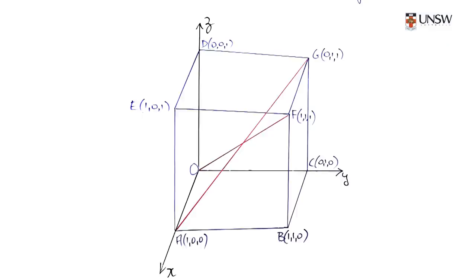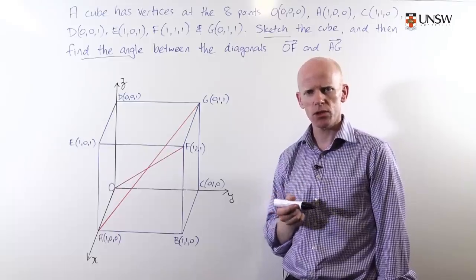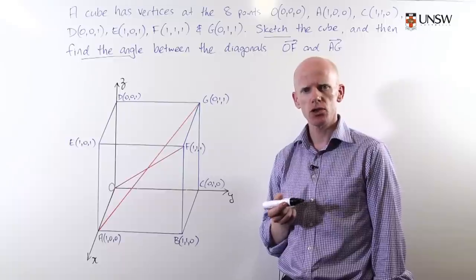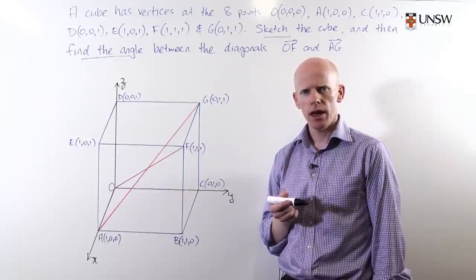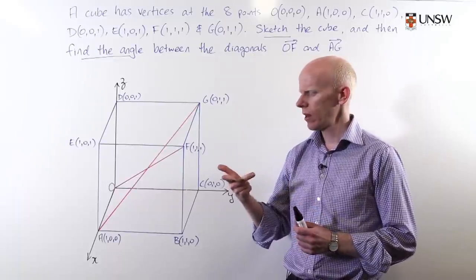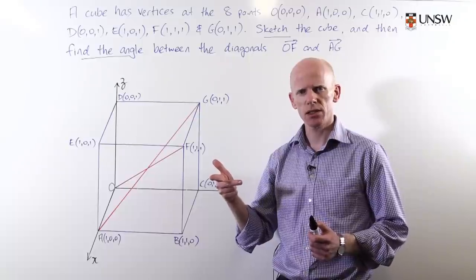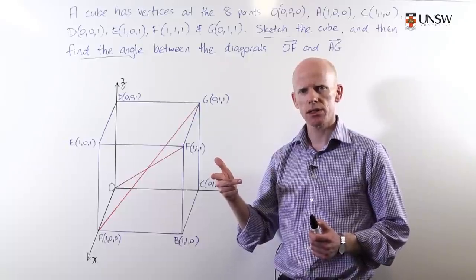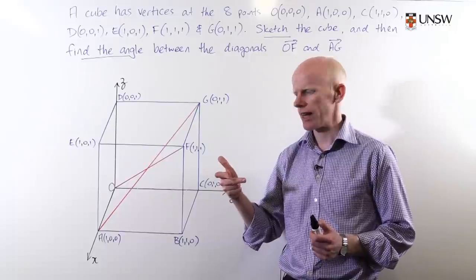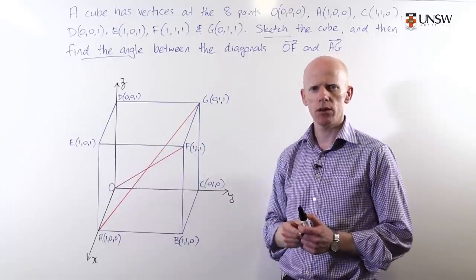The first part of this question — sketching the cube — is very, very important. The first thing you'll want to do before you sketch your cube is choose your axes. Using the right-hand rule, where my index finger represents the x-axis, my middle finger represents the y-axis, and my thumb represents the z-axis, I've come up with this particular configuration.